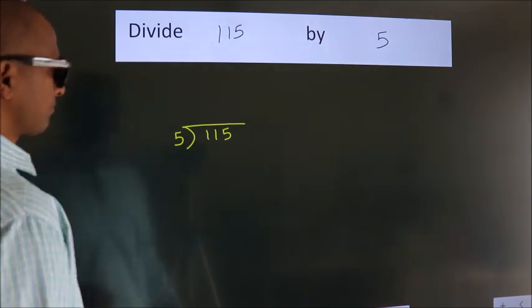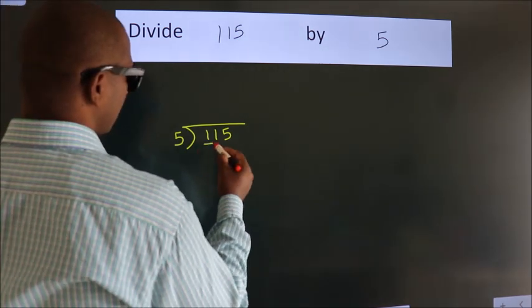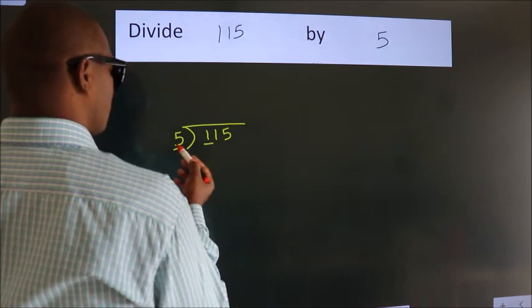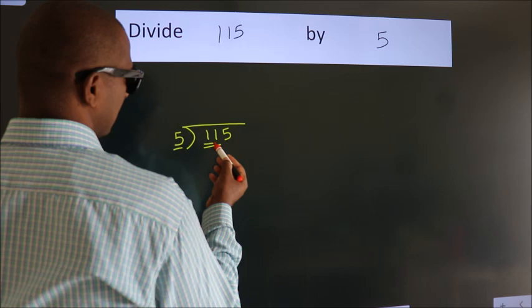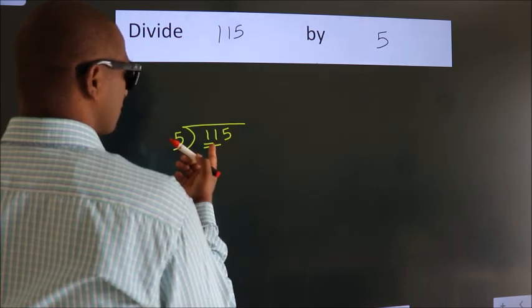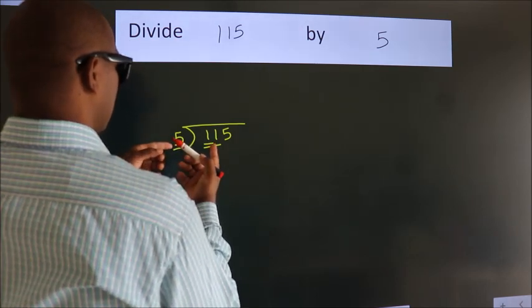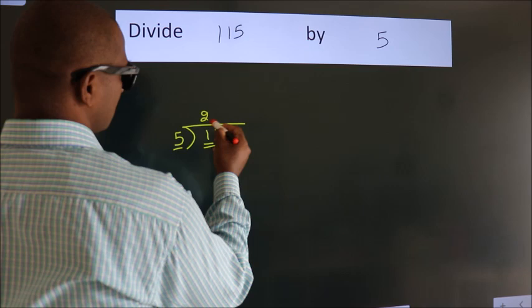Next, here we have 1, here 5. 1 smaller than 5. So we should take two numbers, 11. A number close to 11 in 5 table is 5 twos, 10.